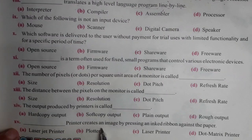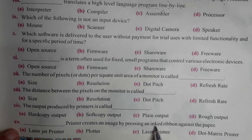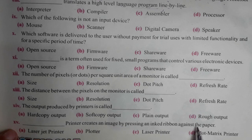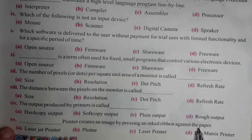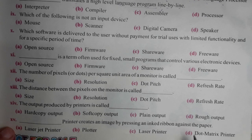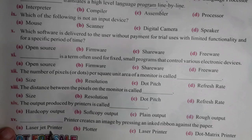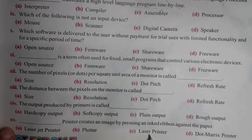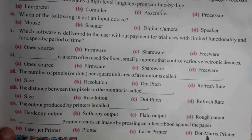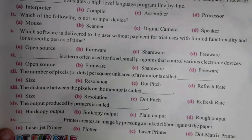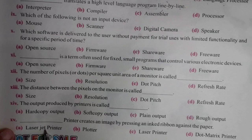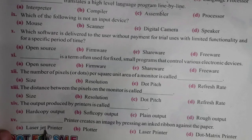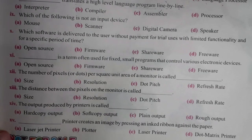Dash printer creates an image by pressing an ink ribbon against the paper. Options: laser jet, plotter, laser printer, dot matrix. The correct answer is dot matrix — it presses an ink ribbon against the paper.